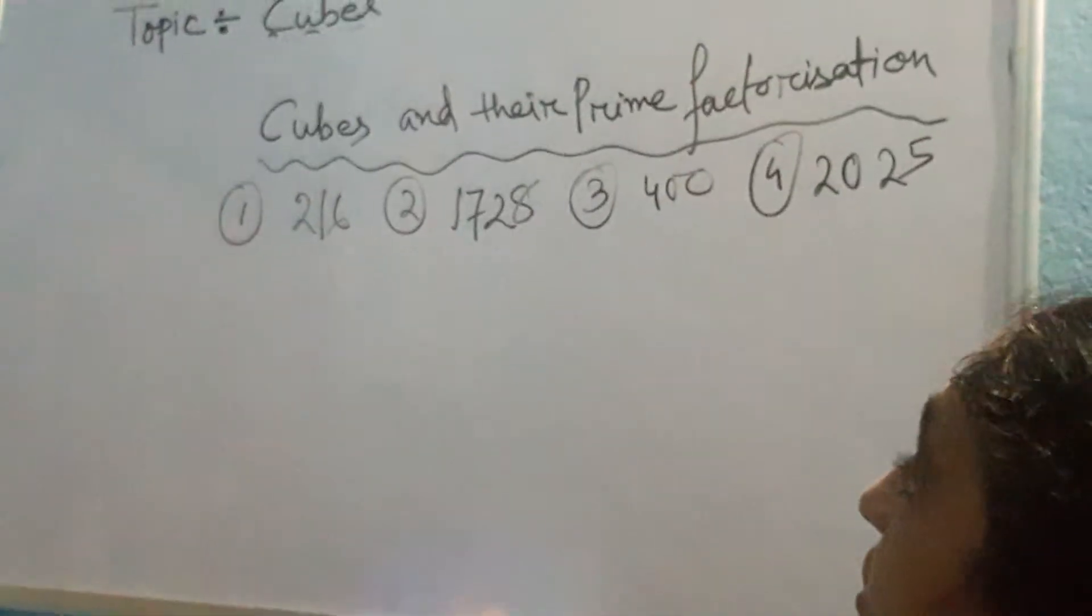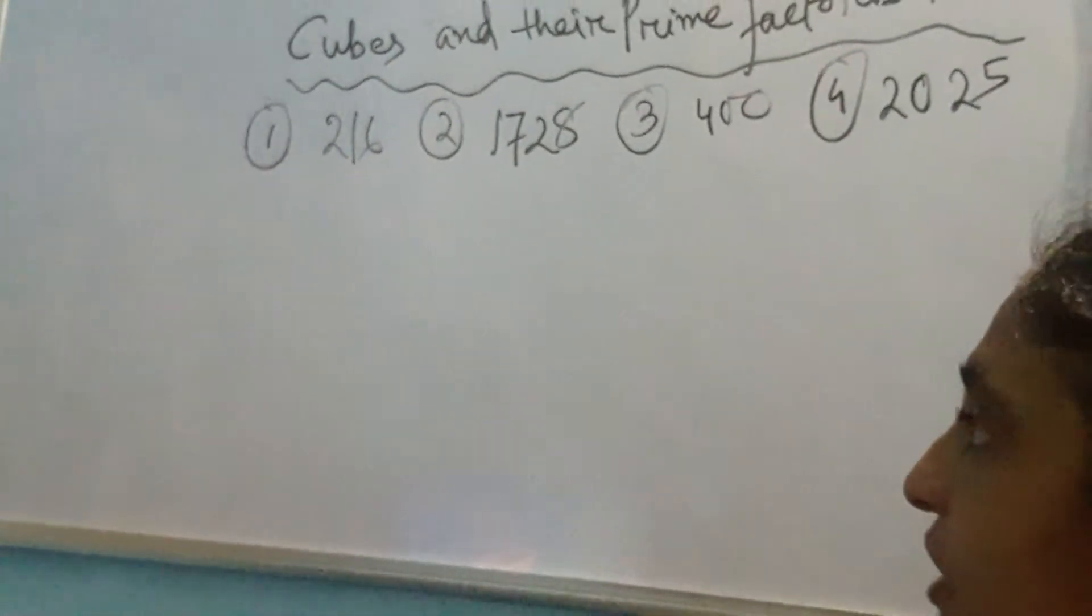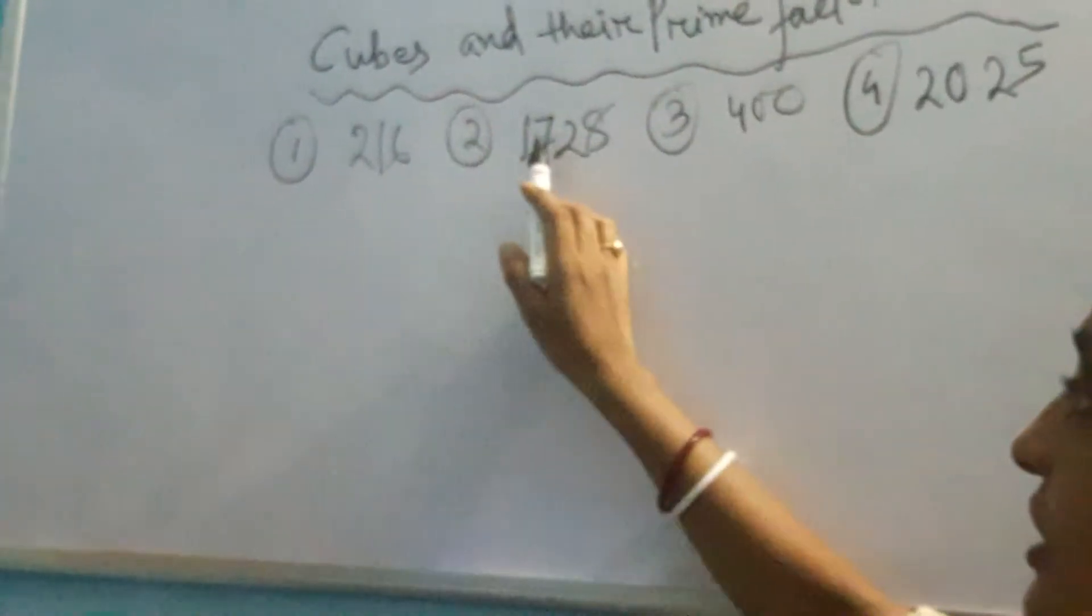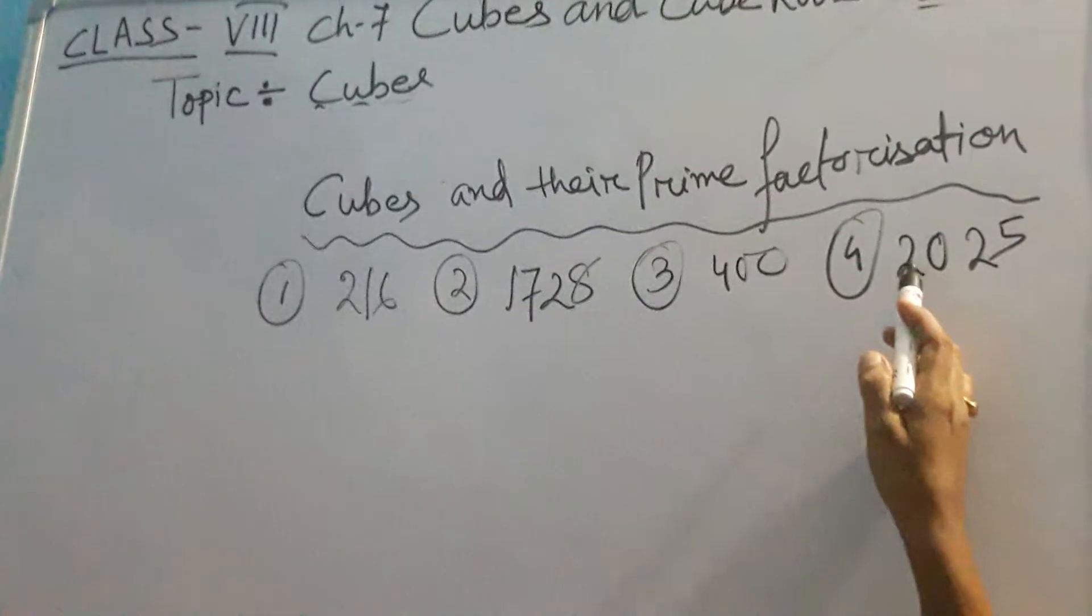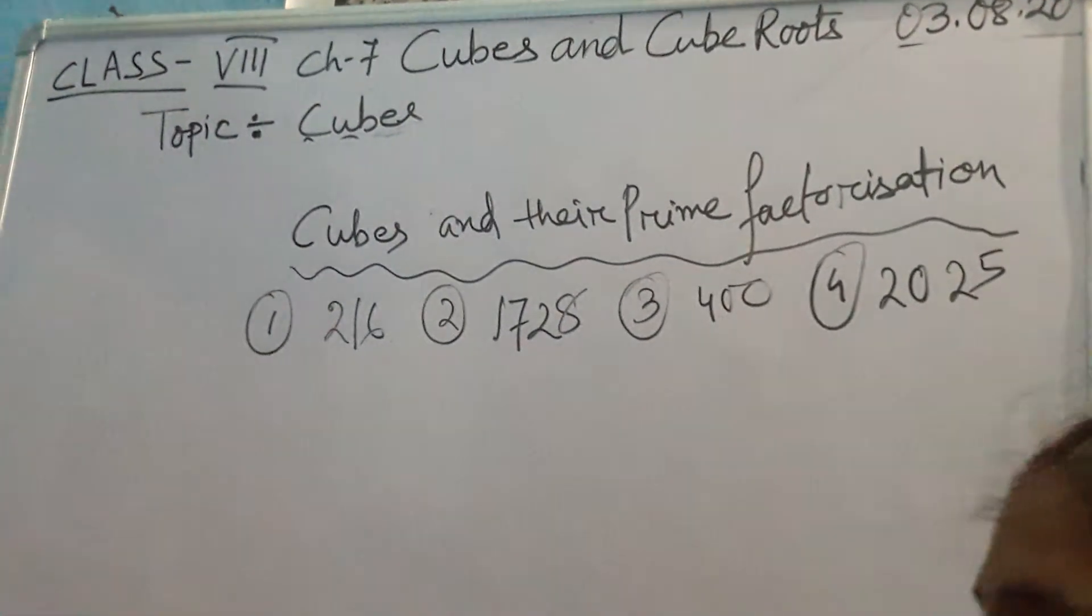Now we will discuss cubes and their prime factorization. I have taken some numbers here. You can see first one is 216, then 1728, then 400 and 2025. Now I will factorize them in prime numbers.